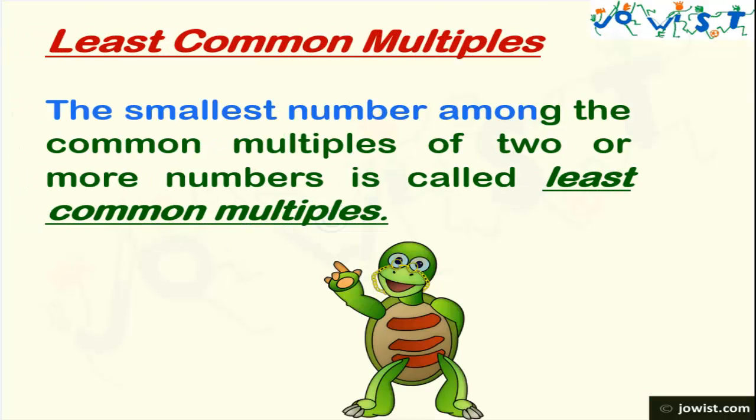What is least common multiple? The smallest number among the common multiples of 2 or more numbers is called least common multiples. Coming back to the topic.